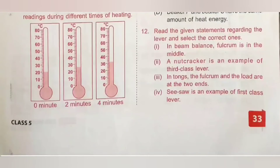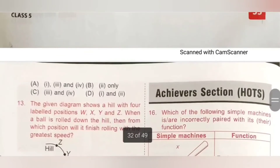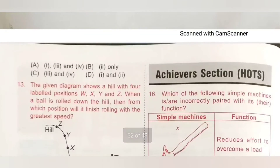Question 12: Read the given statements regarding the lever and select the correct ones. Statement 1: In a beam balance, the fulcrum is in the middle — correct. Statement 2: A nutcracker is an example of a third class lever — incorrect; it is a second class lever. Statement 3: In tongs, the fulcrum and load are at the two ends — correct. Statement 4: Seesaw is an example of a first class lever — correct. So statements 1, 3, and 4 are correct. Option A is the correct answer.